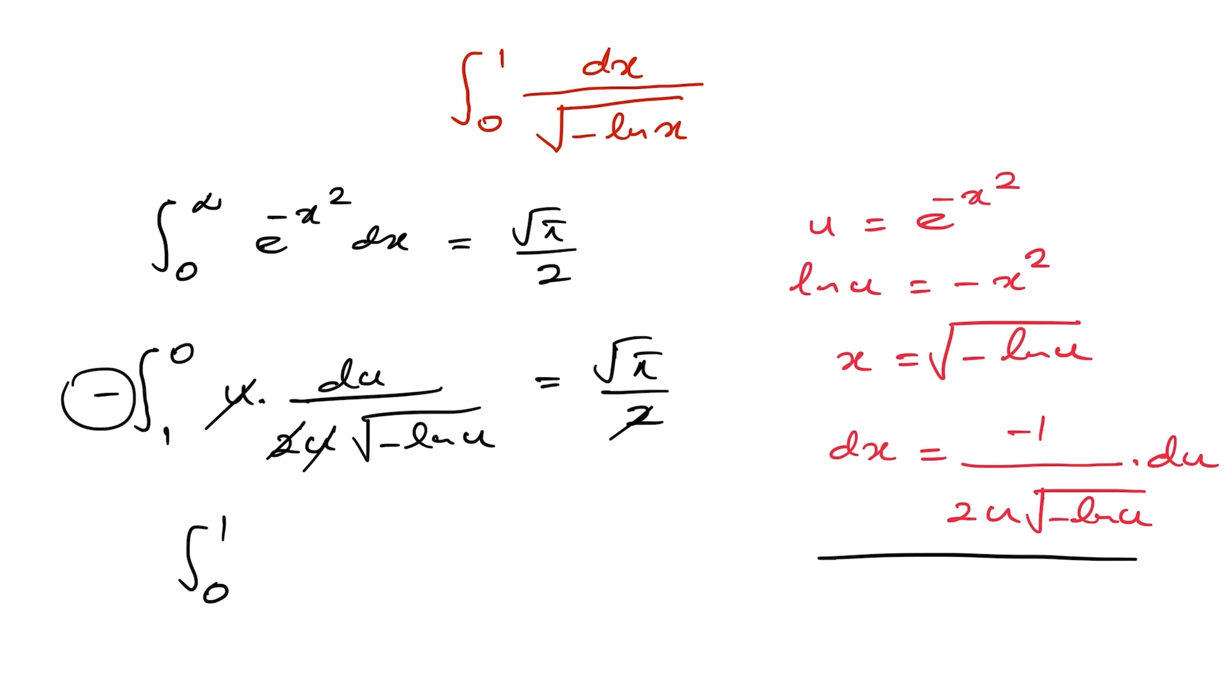...so instead of u we can use x. Therefore, we have dx over the square root of minus natural log of x is equal to square root of pi. Okay, this is the answer.